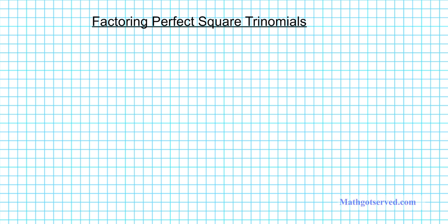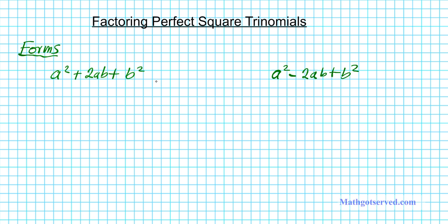The first thing we're going to do is consider the two forms of perfect square trinomials. So let's write these down. The first form is a squared plus 2ab plus b squared, and the second form is a squared minus 2ab plus b squared. You notice that they both have a squared, 2ab, and b squared — the first one has a plus and the second one has a minus.